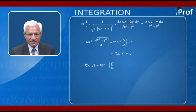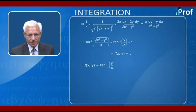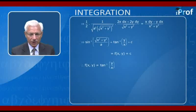Using standard integral formulae, we get sin⁻¹(√(x²+y²)/a) = tan⁻¹(y/x) + c, which is given as f(x,y) + c. Therefore, f(x,y) = tan⁻¹(y/x), which shows option (c) is correct.